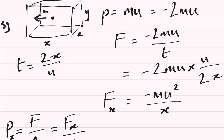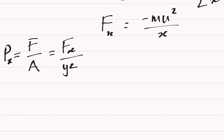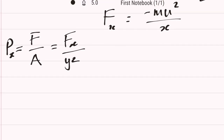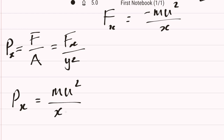Think about our box here — we're talking about the pressure on this wall. Taking the force equation and substituting it in, we get the equation for pressure in the x dimension: mu² over (x times yz). And what is x times y times z? It is the volume of our box.